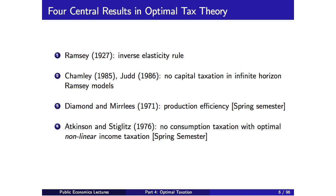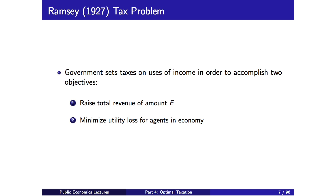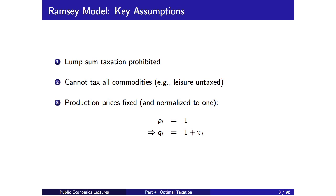We start with the Ramsey tax problem, the simplest and classic optimal tax model. The government sets taxes on uses of income — say consumption goods — to accomplish two objectives. The government wants to raise a total amount of revenue E, which we take as exogenous. And as a benevolent social planner, you want to raise that tax in the most efficient possible way — maximizing the agent's utility subject to this revenue requirement, or equivalently minimizing the utility loss due to the tax.